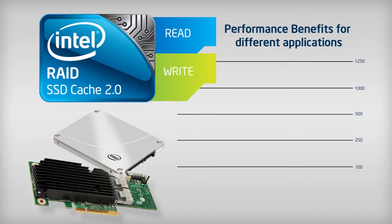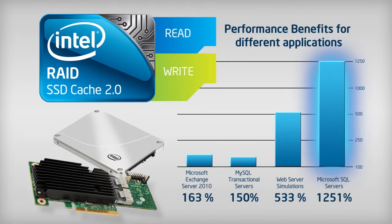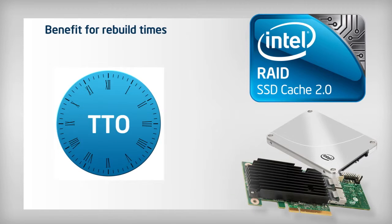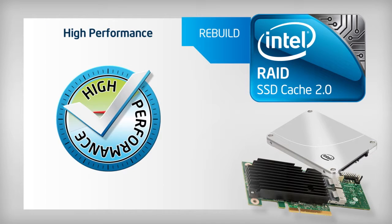Using benchmarks to simulate systems being used in the real world, SSD Cache 2.0 enabled significant improvements in applications, such as 1,251% for Microsoft SQL Server. Intel SSD Cache 2.0 can also decrease the time to optimal, or TTO, by relieving the disk of host operations, which allows it to rebuild at a faster rate. Furthermore, SSD Cache 2.0 can help maintain high performance when the underlying hardware is not optimal.